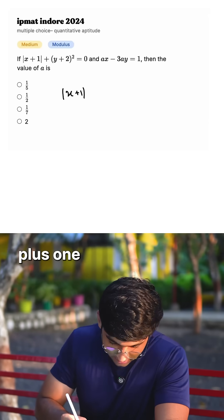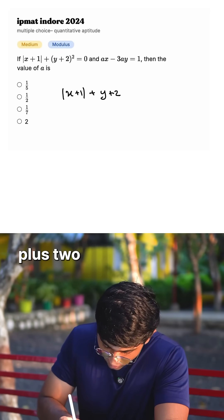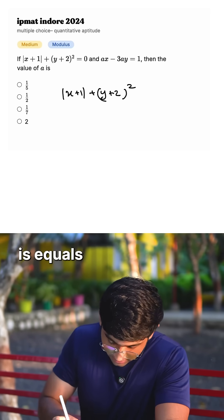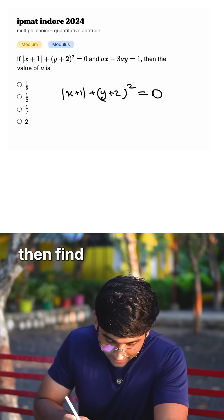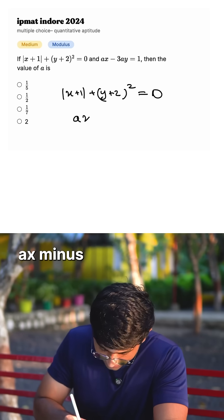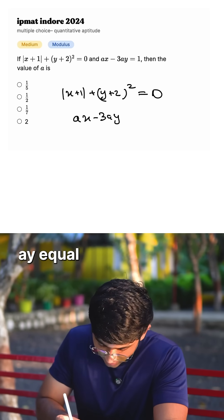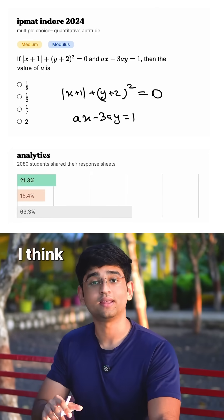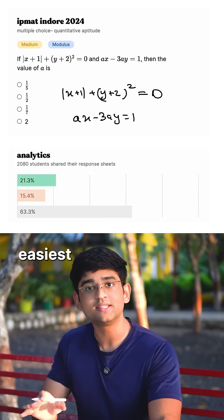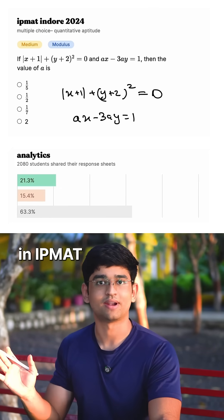If mod of (x+1) plus (y+2) squared is equal to 0, then find the value of a, where x minus 3ay equals 1. This is the easiest question that came in IPM AT.